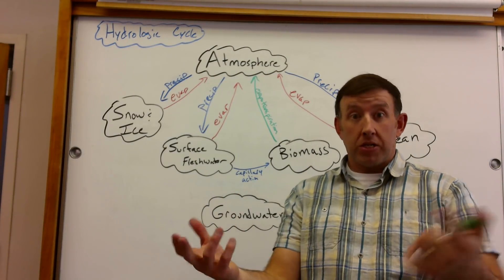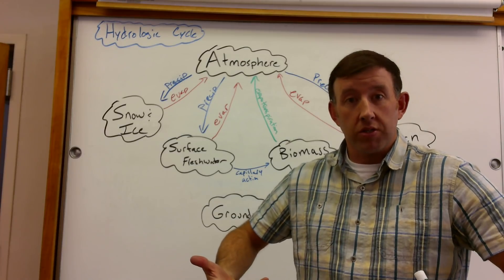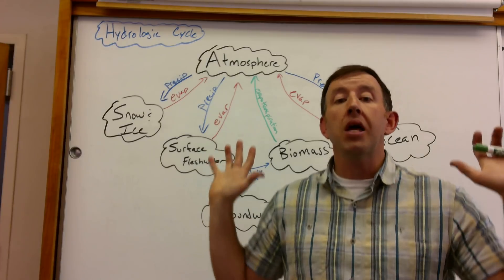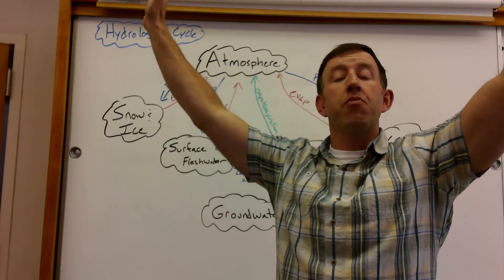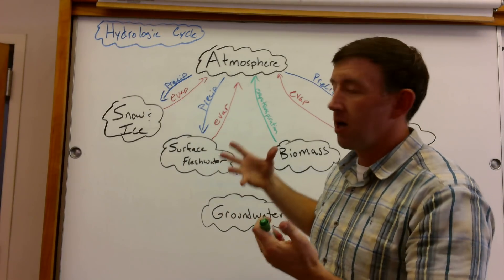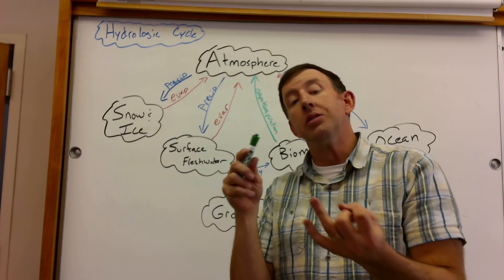So again, plants, trees especially, and larger plants, they take water out of the surface, from the surface, bring it up, transfer that water, and then a lot of that water then evaporates off the leaves and outer structures of the plants themselves. And that process by which evaporation happens from plants is called evapotranspiration.